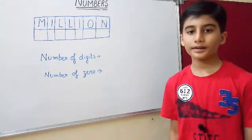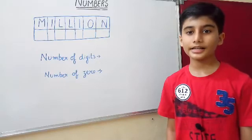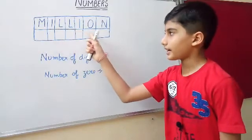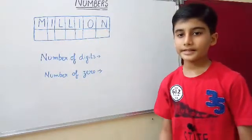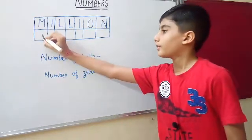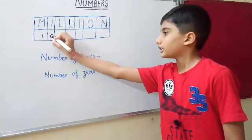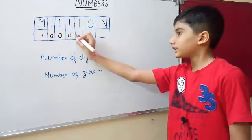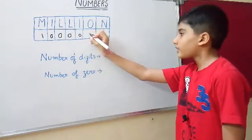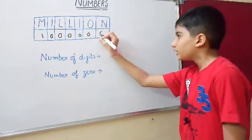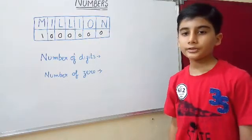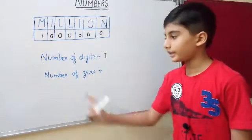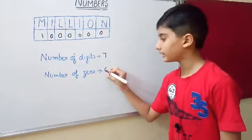Here is a trick to remember how many zeros are in a million. First, write the spelling of million: M-I-L-L-I-O-N. Then write the place value: 1, 0, 0, 0, 0, 0, 0. So you can see the number of digits in a million is seven, and the number of zeros in a million is six.